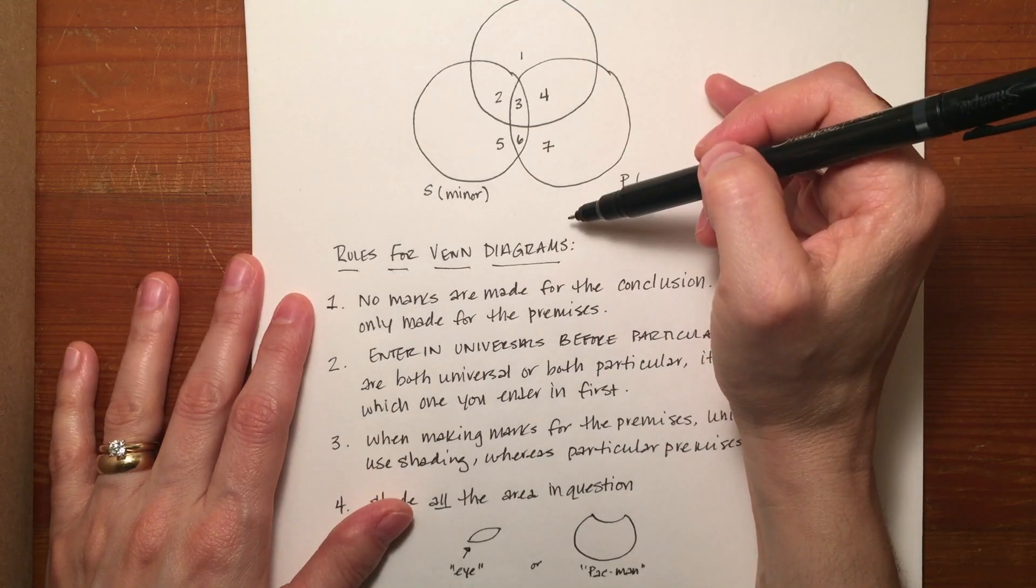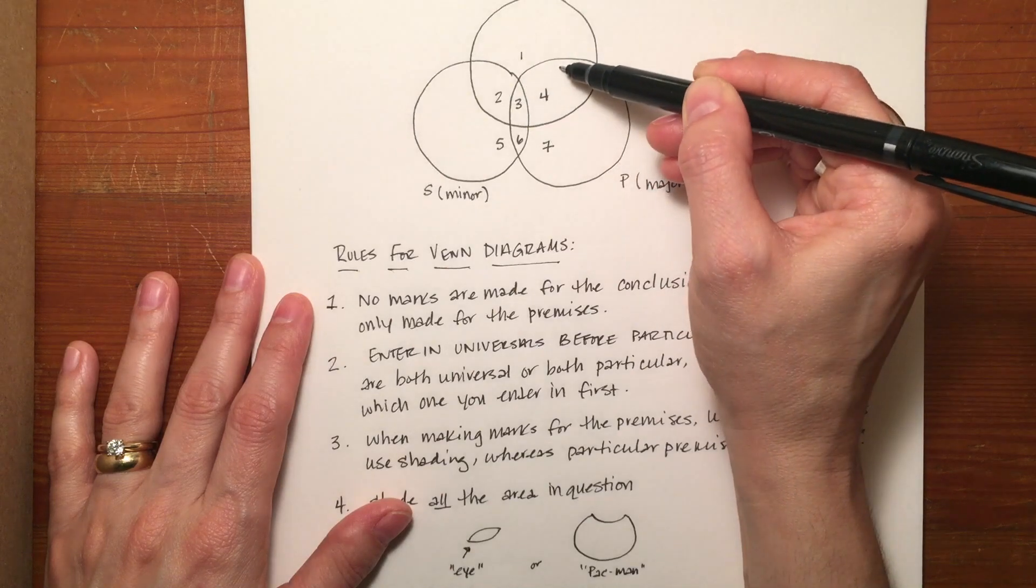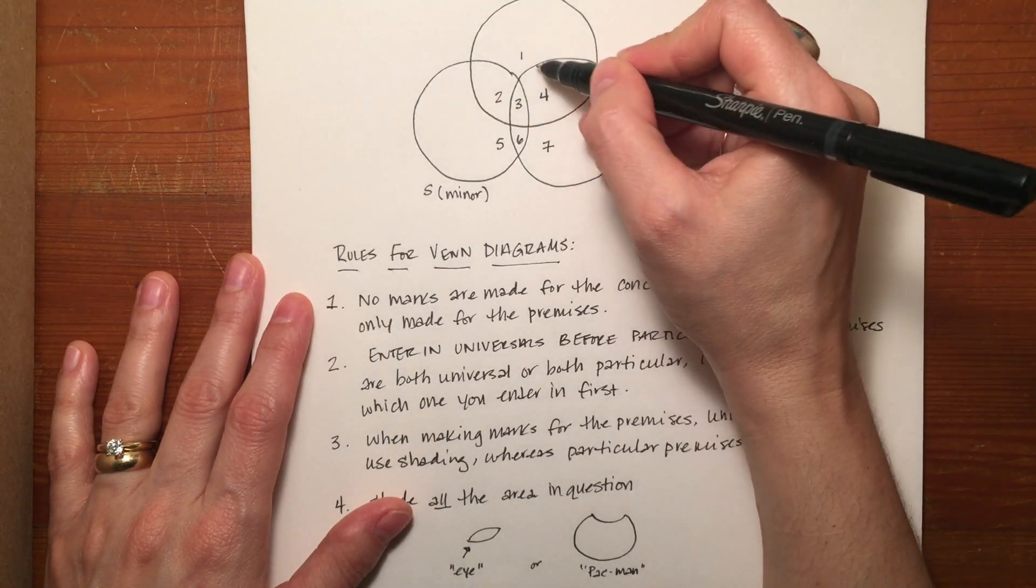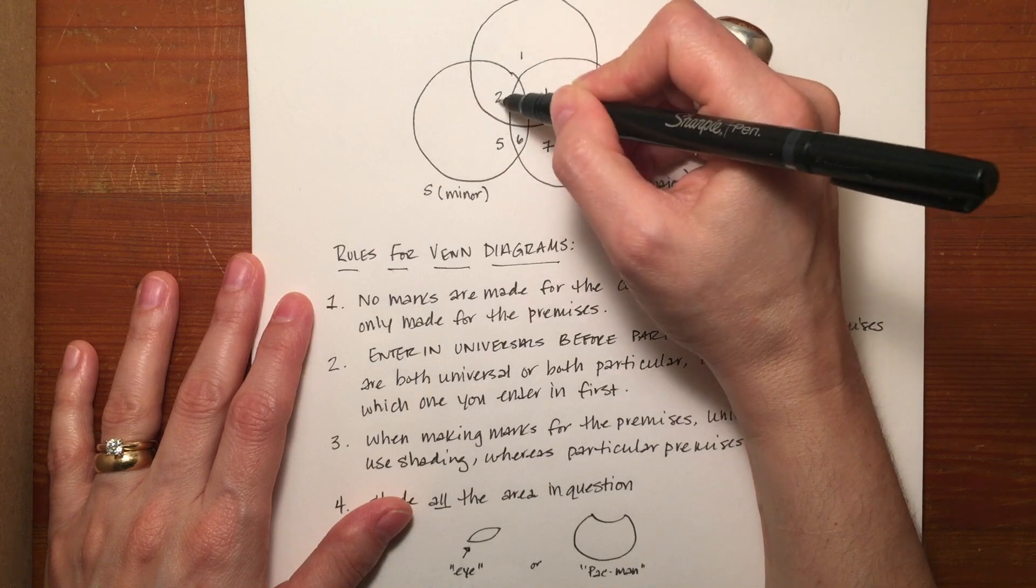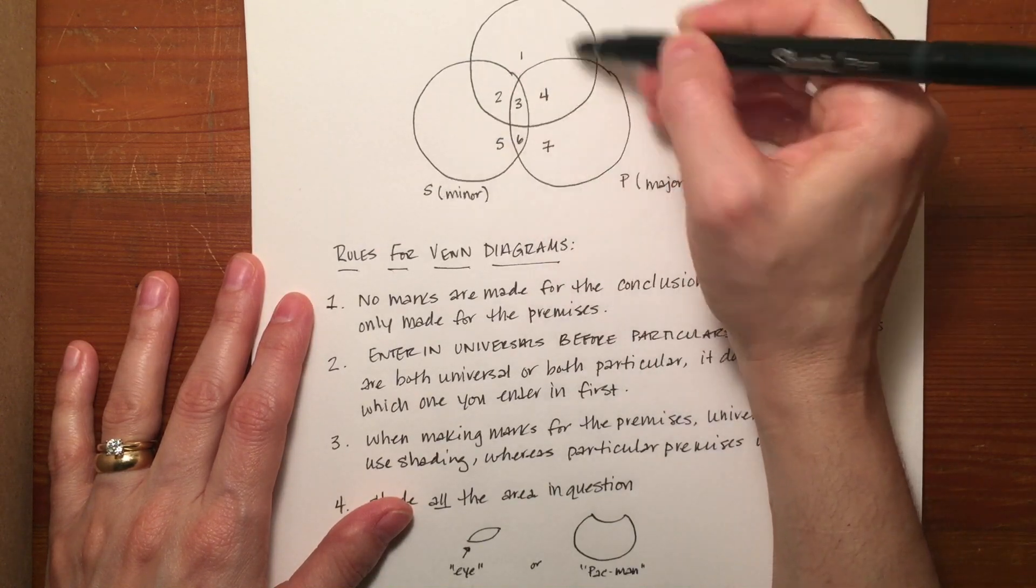Each one of these works at least twice for each term. So again, the middle term, the larger portion could either be 1 and 2, and the eye could be 3 and 4, or it could be areas 1 and 4, and the eye could be 2 and 3. It's going to rotate depending on which one you're looking at.